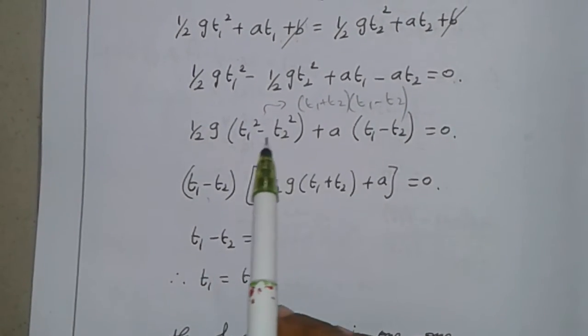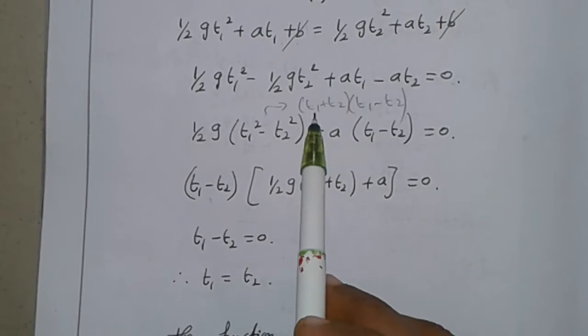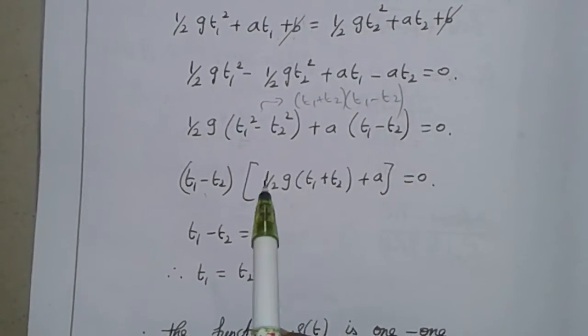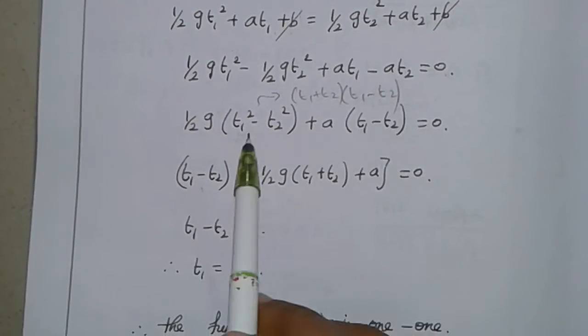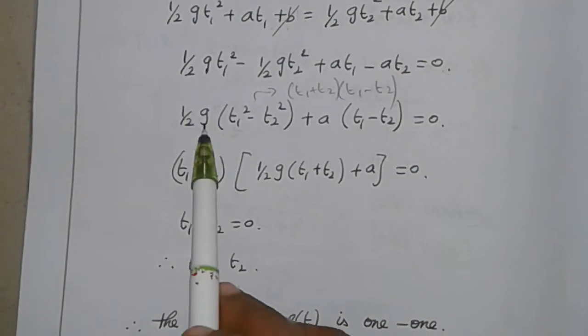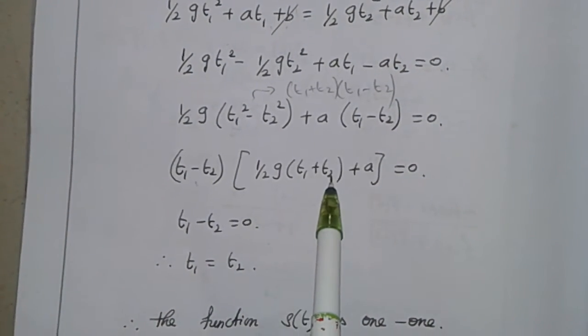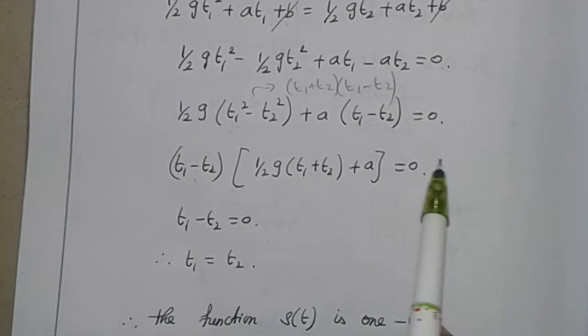Using the a² - b² = (a+b)(a-b) format, and factoring out (t₁ - t₂) as common, we have (t₁ - t₂)[(1/2)g(t₁ + t₂) + a] = 0.